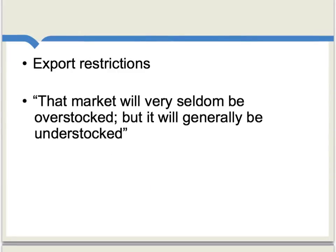Smith also asks: what about export restrictions on corn? Export restrictions, in essence, tell domestic farmers that they cannot send their corn abroad. These restrictions are sometimes popular because people think, 'Well, if we're hungry, why is it worth sending corn abroad?' But Smith is skeptical. He realizes that the freer market is more likely to produce a higher supply of foodstuffs, and argues that in a world of export restrictions, farmers are much less likely to produce a lot in the first place. As Smith's argument runs: 'That market will very seldom be overstocked, but it will generally be understocked.' In other words, Smith thought these export restrictions would be self-defeating.